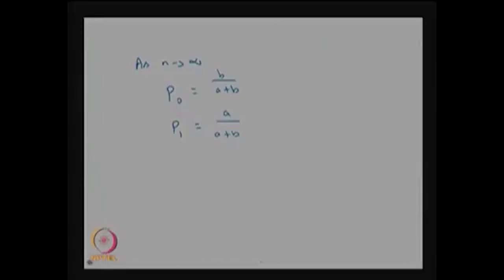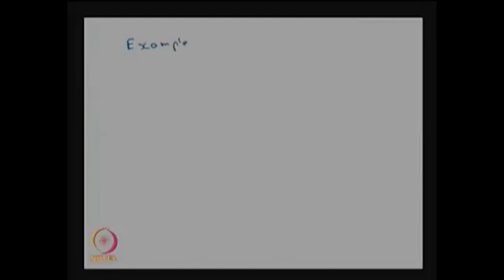The state transition diagram is useful to study the long run distribution — where the system will be as n tends to infinity. Now we move on to the next problem, Example 4.